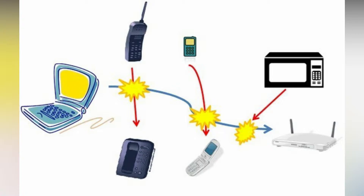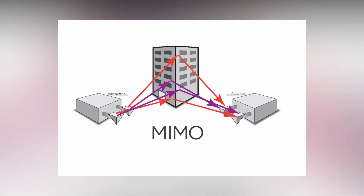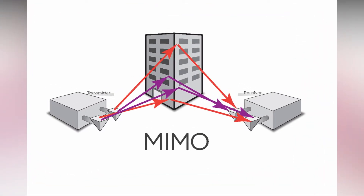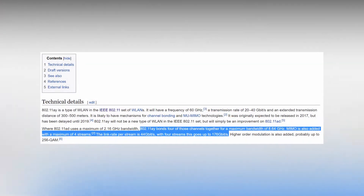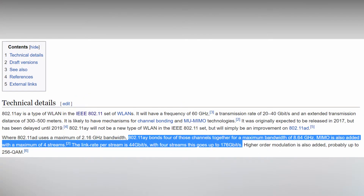This 60 GHz Wi-Fi or 802.11ay supports MIMO, channel bonding, and beamforming. With these advanced technologies and abundant bandwidth availability, the data speeds that 802.11ay offers are unimaginable. This technology offers data rates up to 176 Gbps — yes, you heard it right. Theoretically, with 4 channels and a total bandwidth of 8.64 GHz, we get speeds up to 176 Gbps. Essentially, 802.11ay promises multi-Gbps Wi-Fi speeds of at least 40 Gbps.